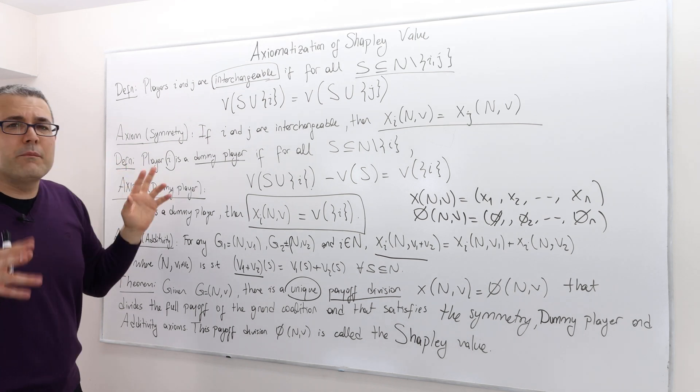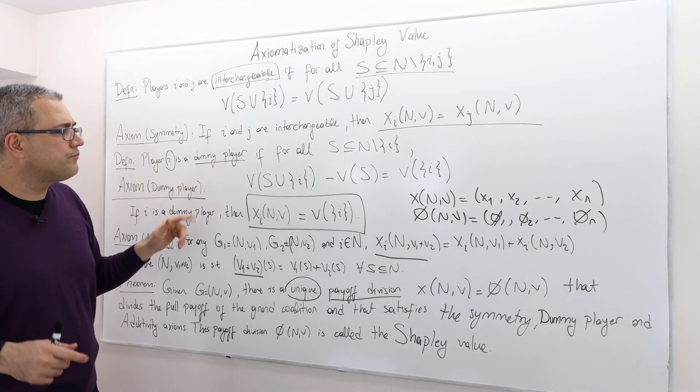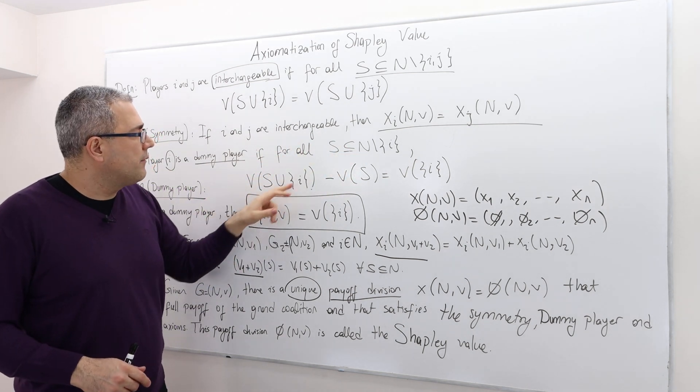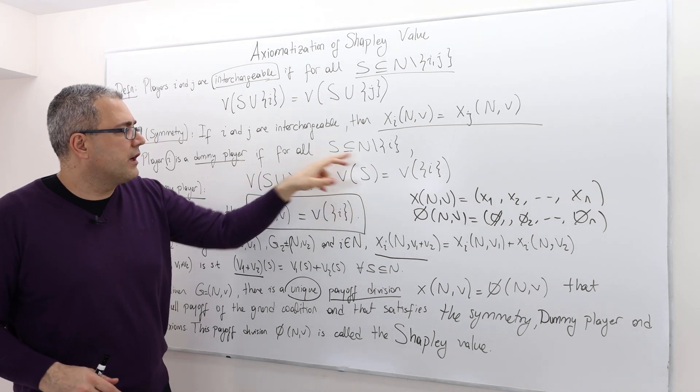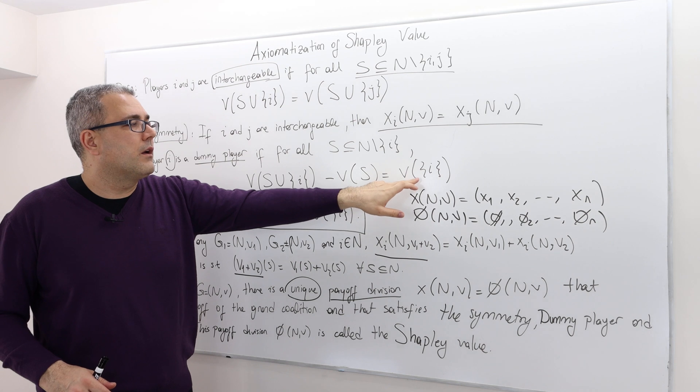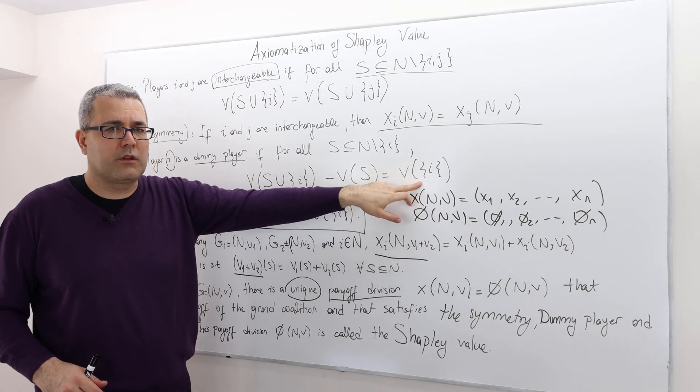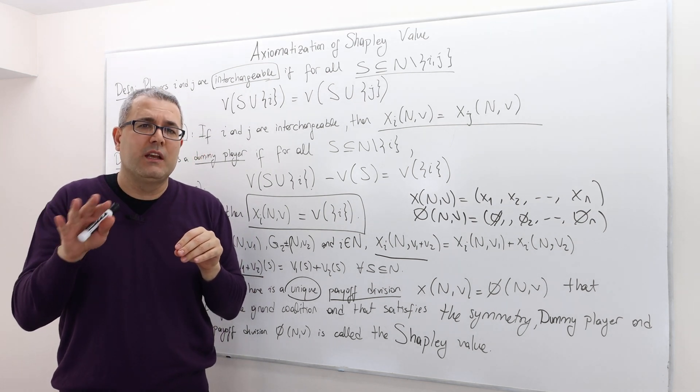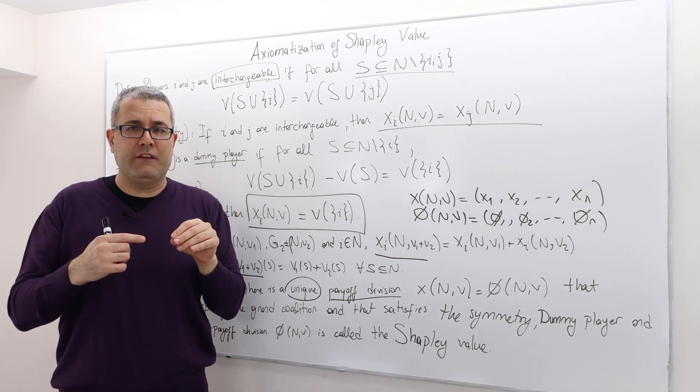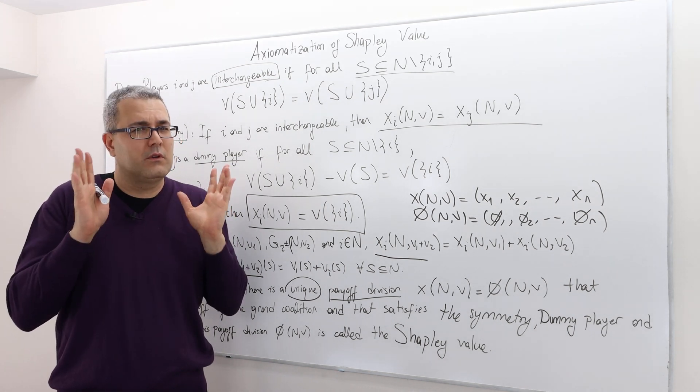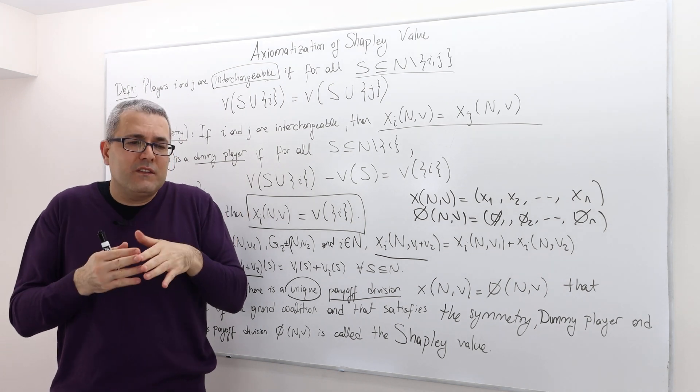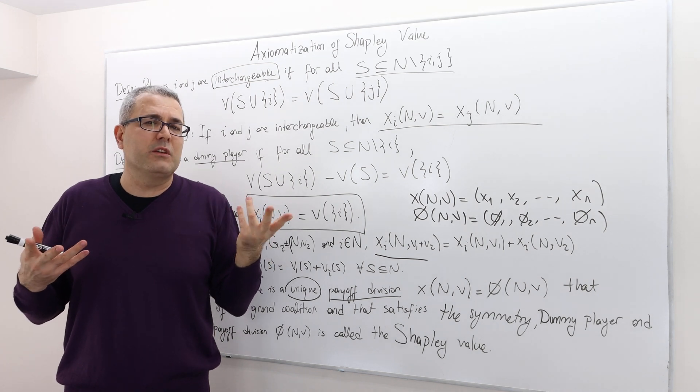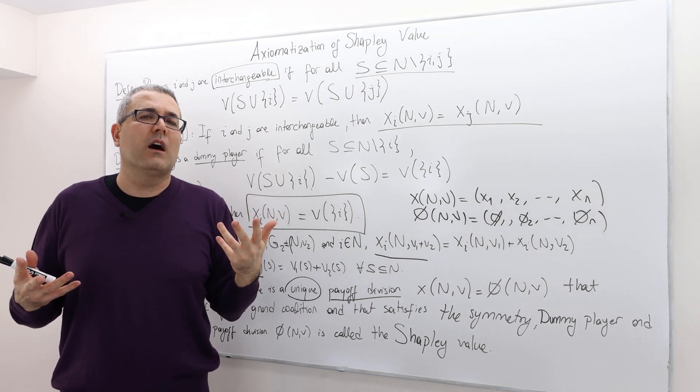The second definition is a dummy player. Player i is called a dummy player if for any coalition s, which excludes player i, the marginal contribution of player i is exactly equal to his own, his self-worth. What does that mean? That means player i's marginal contribution to any coalition is identical to what he could achieve by being alone. So his being part of any coalition, it doesn't actually bring anything new to the table.